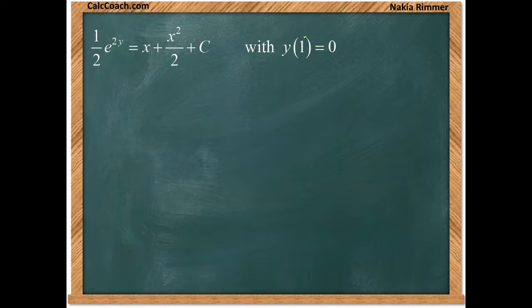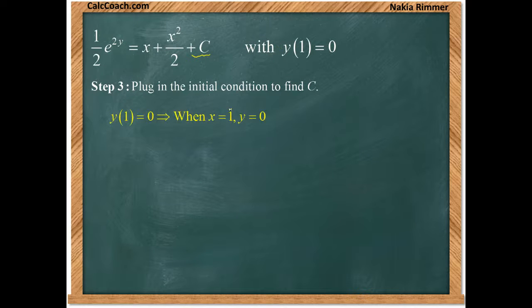There's a condition that says y of 1 equals 0. Step 3 is to plug in this condition to find out what c is. So when x is 1, y should be 0. That'll leave the equation only with c. Plug it in.